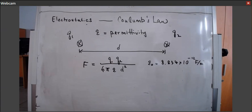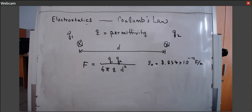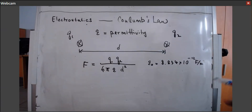Metals also have their own permittivity. Now, this formula is a scalar formula. Scalar in the sense that it only tells the magnitude — it doesn't give information about the directions. So what we need to do is to convert this formula into vector form.